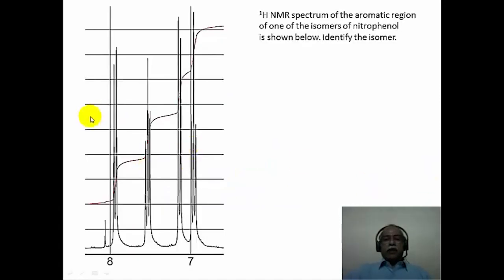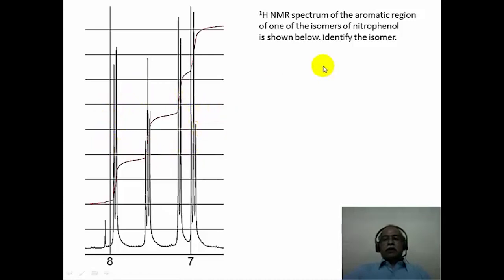Here the NMR spectrum is shown. This is a 300 megahertz proton NMR spectrum of the aromatic region of one of the isomers of nitrophenol shown below. This corresponds to one of the isomers of nitrophenol. We have to identify the nitrophenol isomer based on the spectral pattern that is given here.